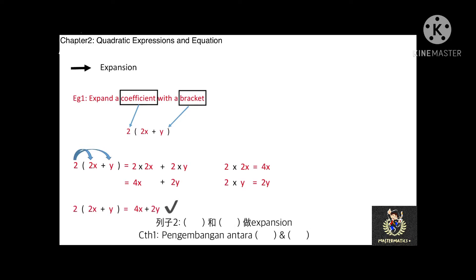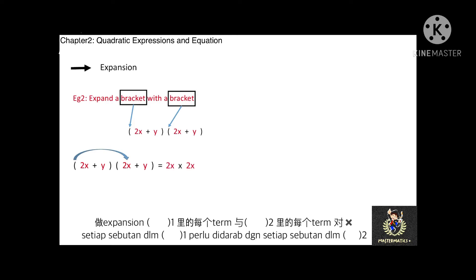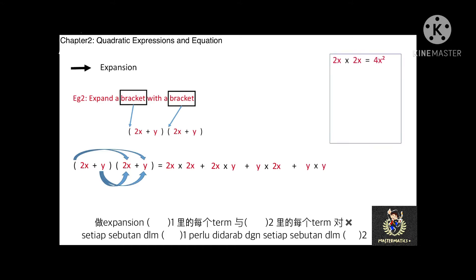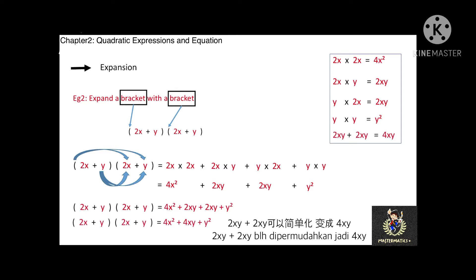See one more example: expand a bracket with a bracket. The terms in the first bracket are 2x plus y, and the terms in the second bracket are also 2x plus y. To expand two brackets, each term within the first bracket is multiplied with each term within the second bracket. The expansion equals 4x squared plus 2xy plus 2xy plus y squared, which simplifies to 4x squared plus 4xy plus y squared.